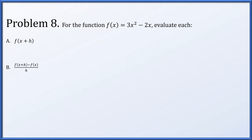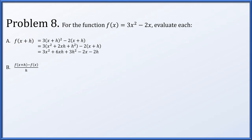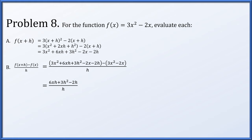In problem eight, for f(x) = 3x² - 2x, we evaluate f(x + h) and [f(x + h) - f(x)] / h. f(x + h) = 3(x + h)² - 2(x + h), which we expand by squaring and distributing. For the difference quotient, the 3x² and -3x² cancel, as do the -2x terms, leaving (6xh + 3h² - 2h) / h. Factoring h from the numerator and canceling gives 6x + 3h - 2, valid provided h ≠ 0.